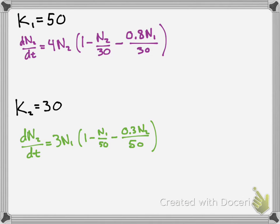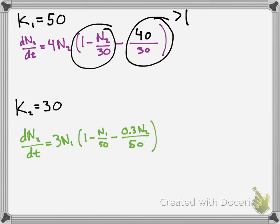So let's deal with the second equation first, which is species two. If you plug in 50 for K1 into this portion here, you'll get something like this. So you get 40 over 30, because 80% of 50 is 40, so .8 times 50. Yeah, okay. So if you just look at this portion here,